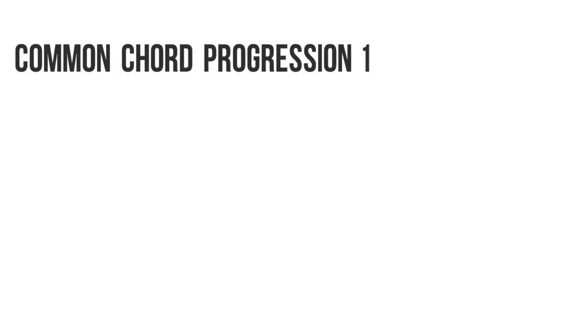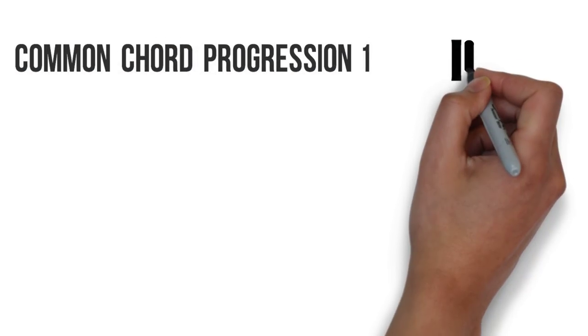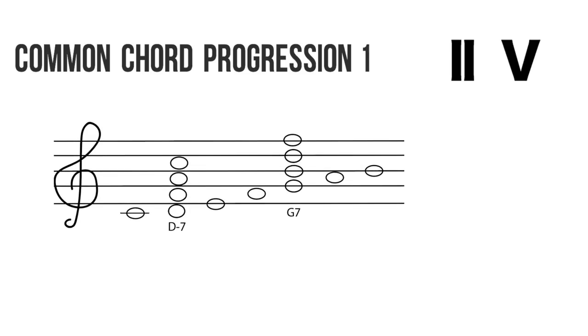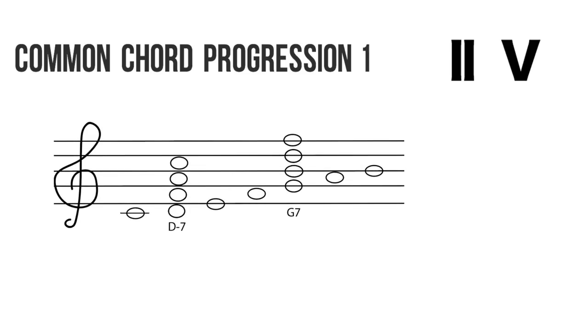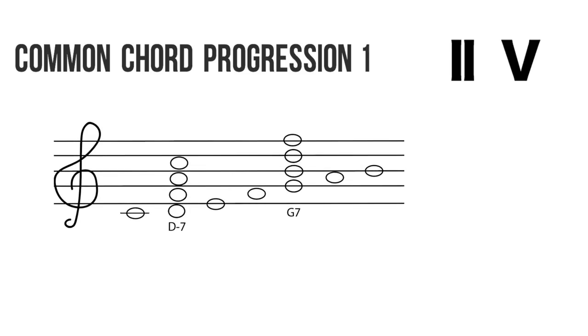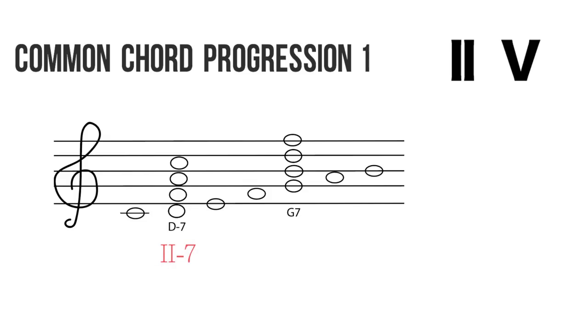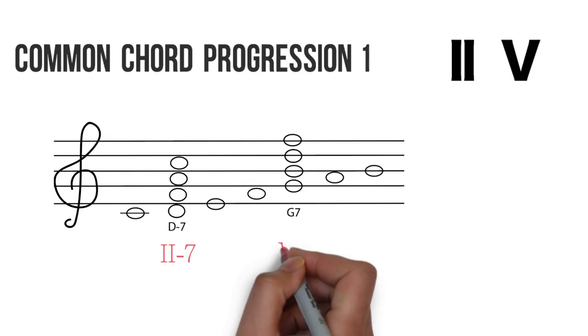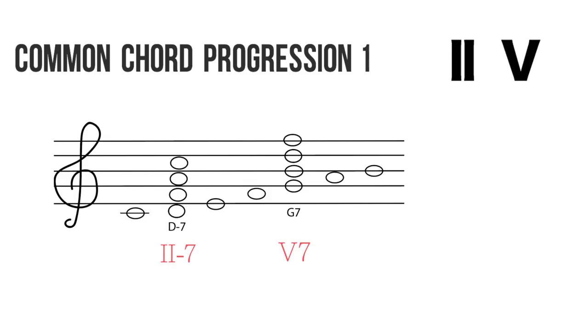Progression one: Two-Five — perhaps the most ubiquitous jazz progression. Let's take the C major scale and build chords on degrees two and five. That gives you D minor seven and G seven. Let's hear that — I'll repeat these chords a few times so you can get used to the sound.